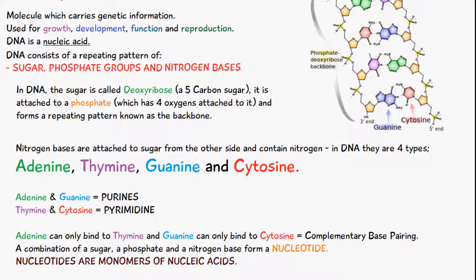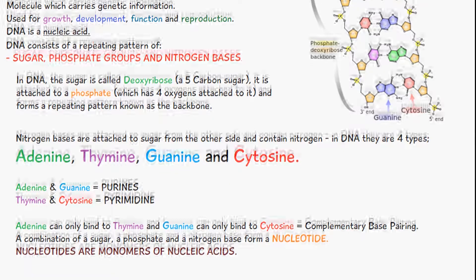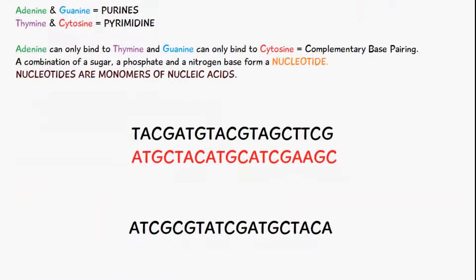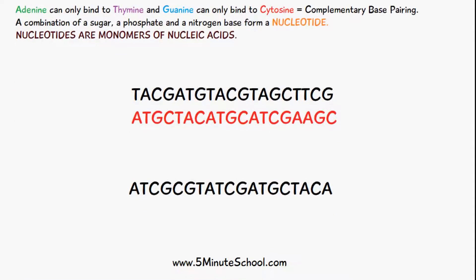A combination of sugar, phosphate, and nitrogen base forms a nucleotide. Nucleotides basically make up nucleic acids — they are monomers, and once you have a repeating pattern of them you eventually get nucleic acids.